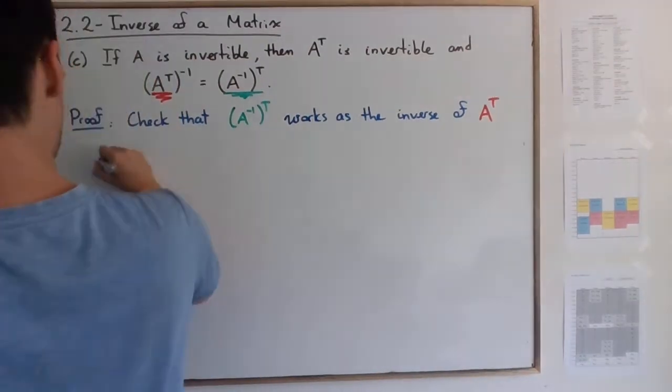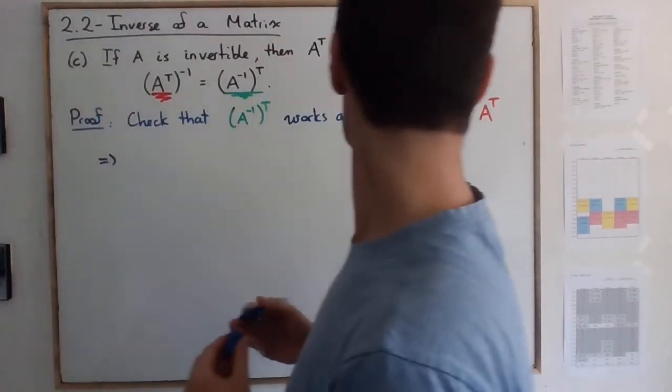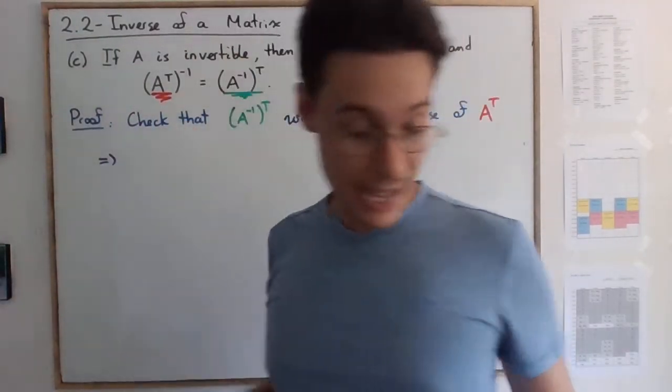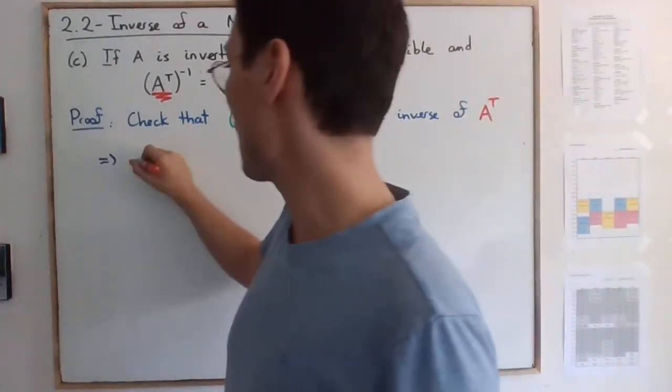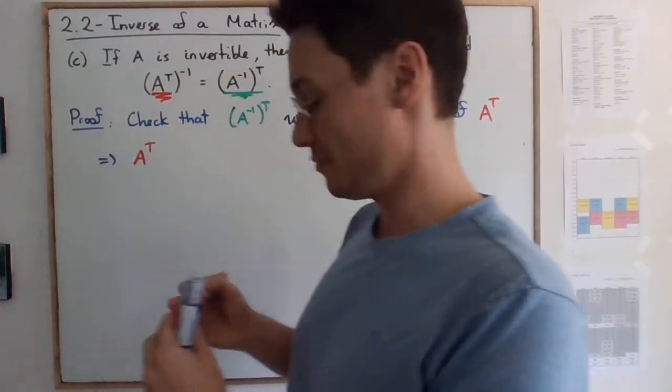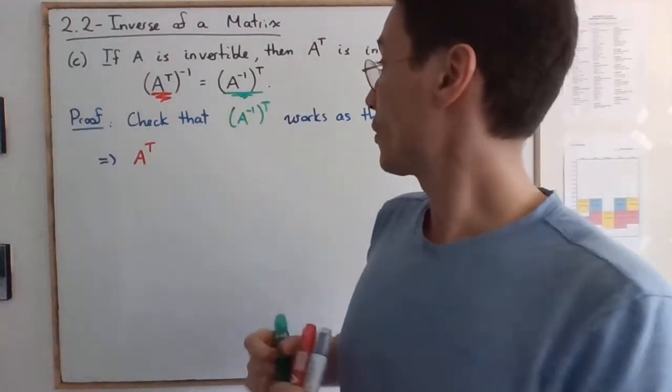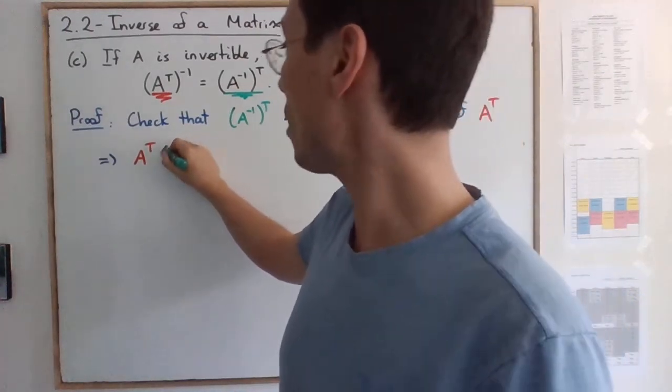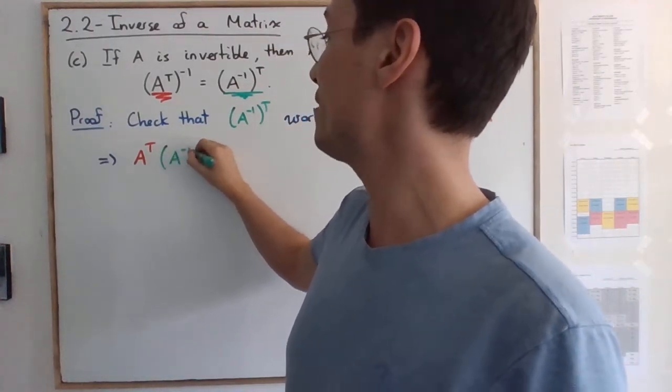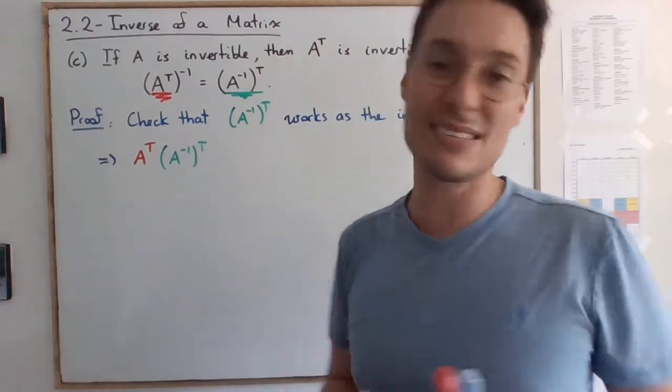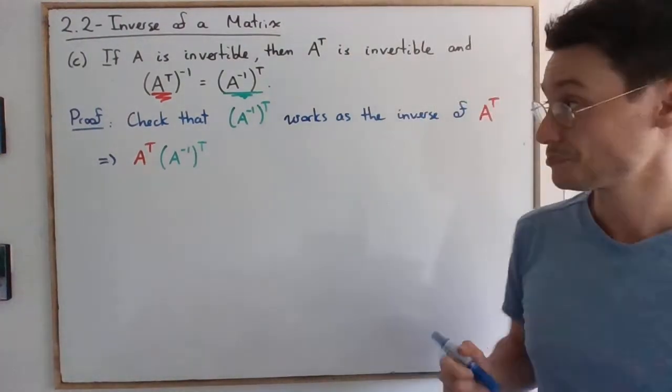So the first thing, we're going to compute A transpose. Now I'm just going to take the color code. We're going to take A^T multiplied by (A^-1)^T. Remember, this is the candidate.